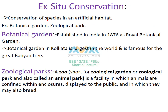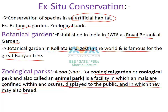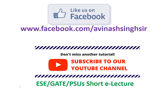Moving on to ex-situ conservation — in this method, conservation practices are performed in an artificial habitat, as in botanical gardens and zoological parks. The Botanical Garden in Kolkata was established in 1876 as the Royal Botanical Garden and is the largest in the world, famous for the Great Banyan Tree. Zoological parks, also called zoological gardens or animal parks, are facilities where animals are confined within enclosures, displayed to the public, and may also be bred.